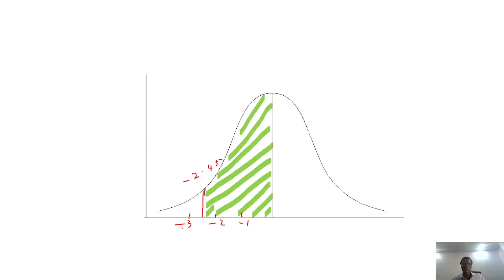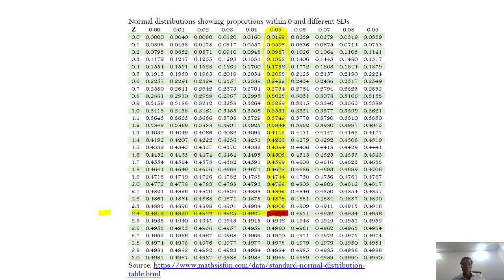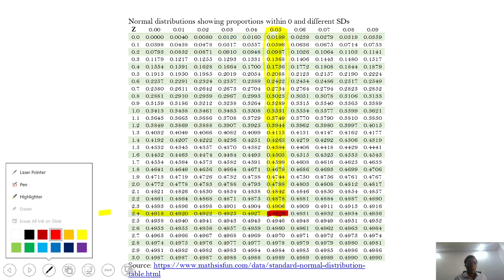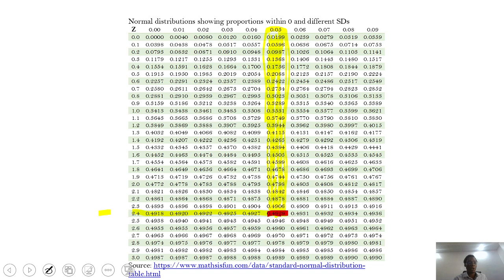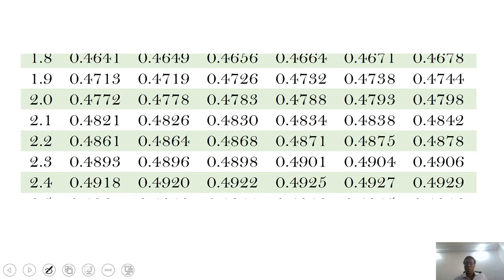To do that, we can check the table here. We will have a value of 0.4929, which is approximately 49.3% of all the values in the distribution. But it's possible that we use a calculator to determine that.